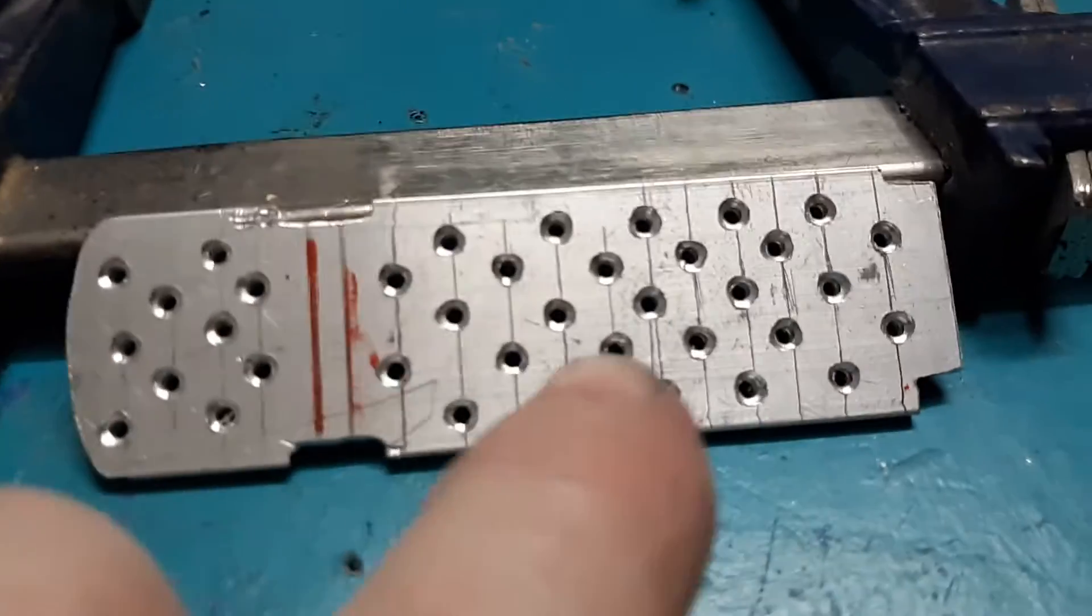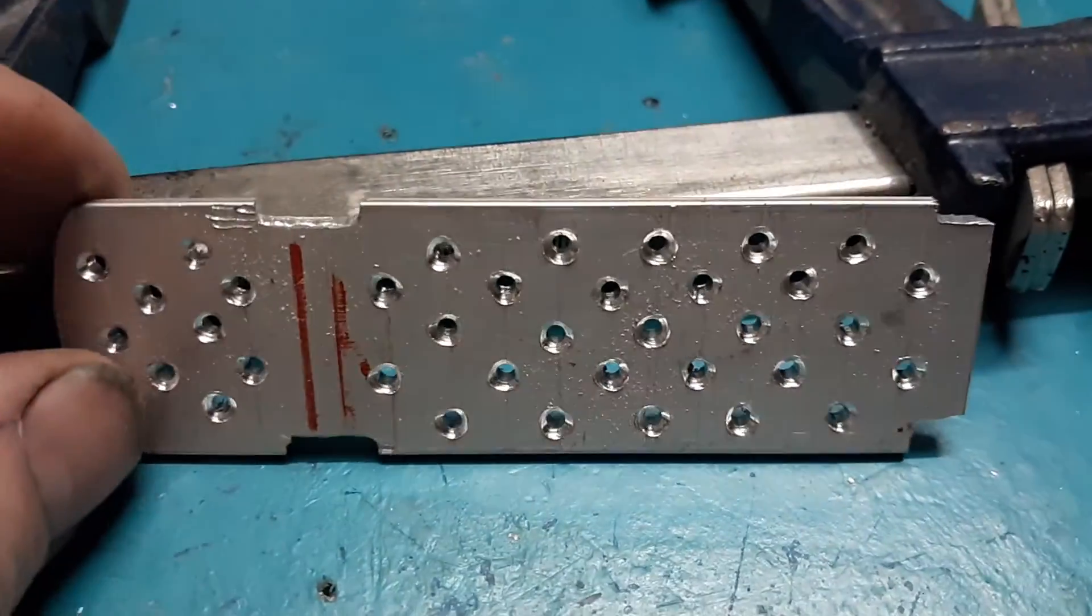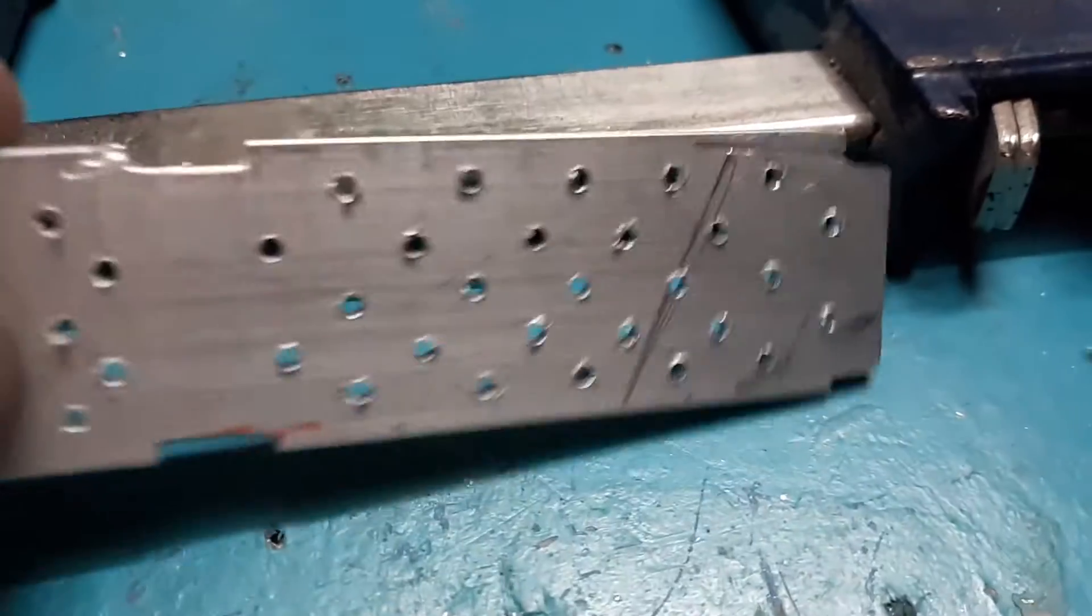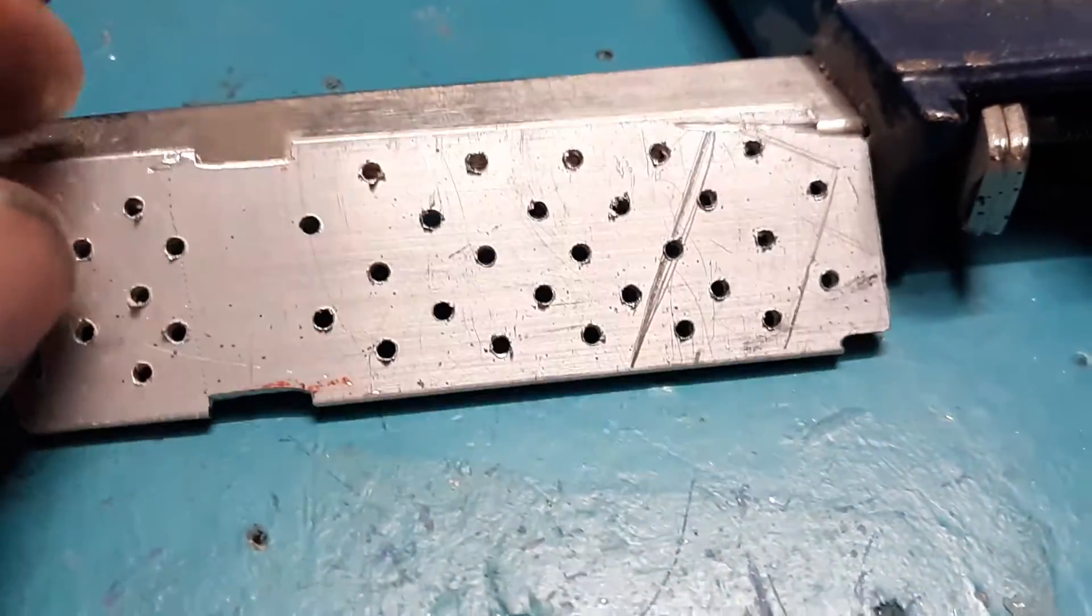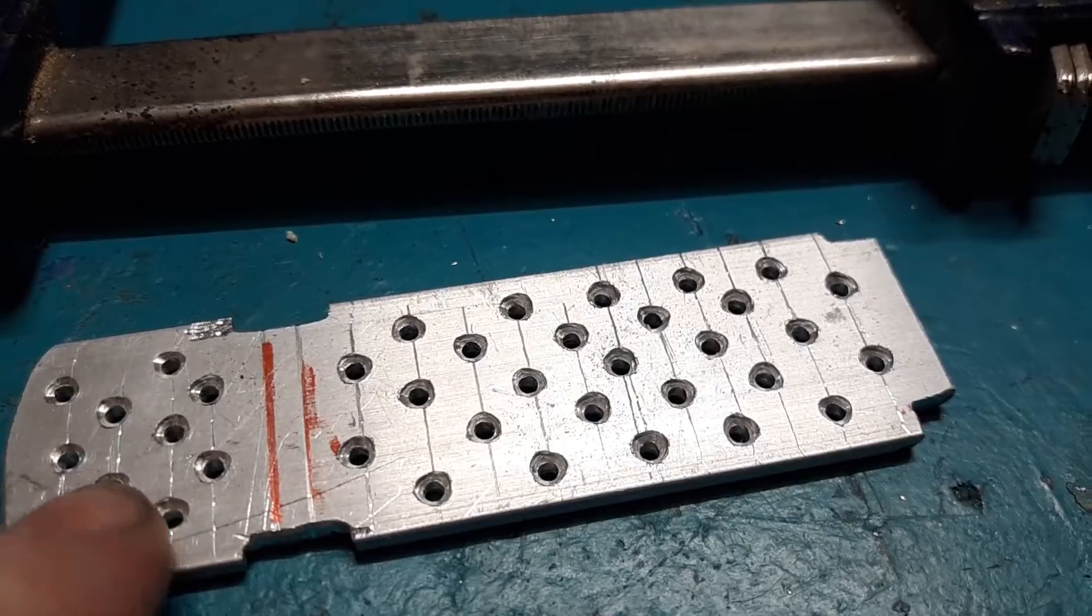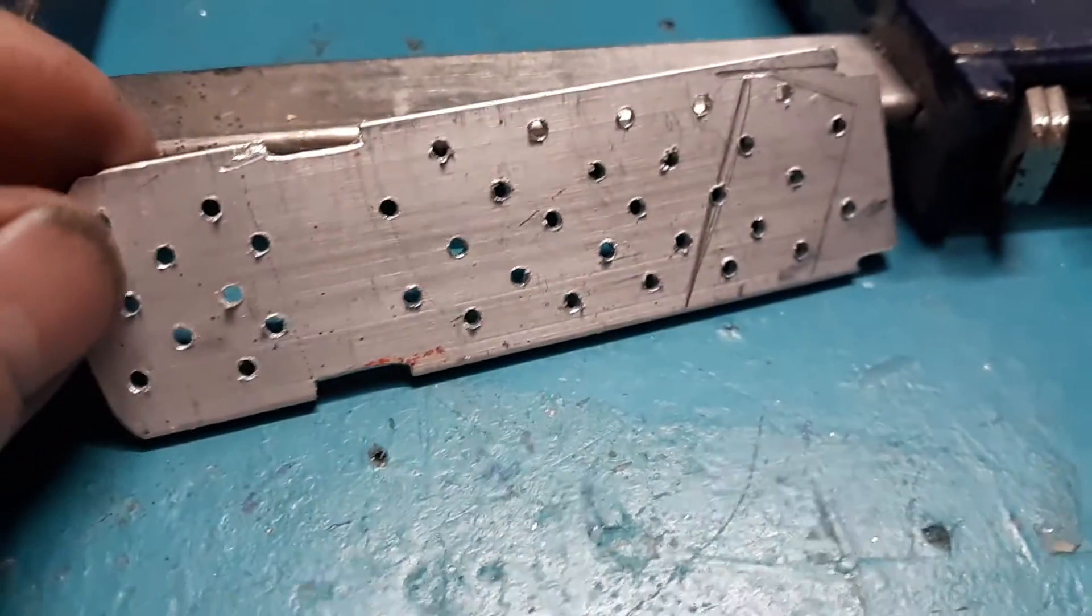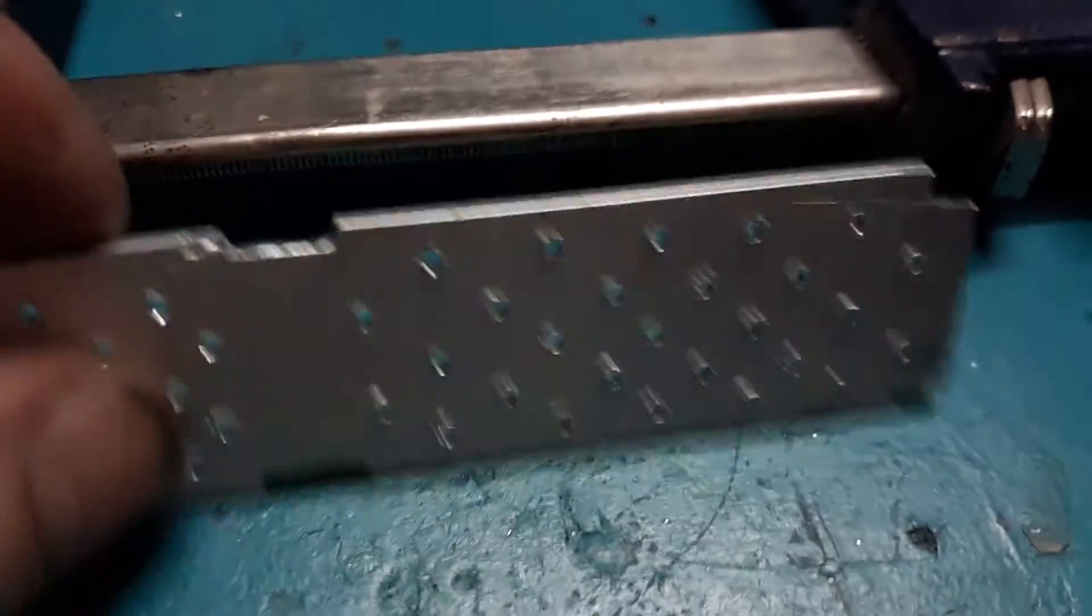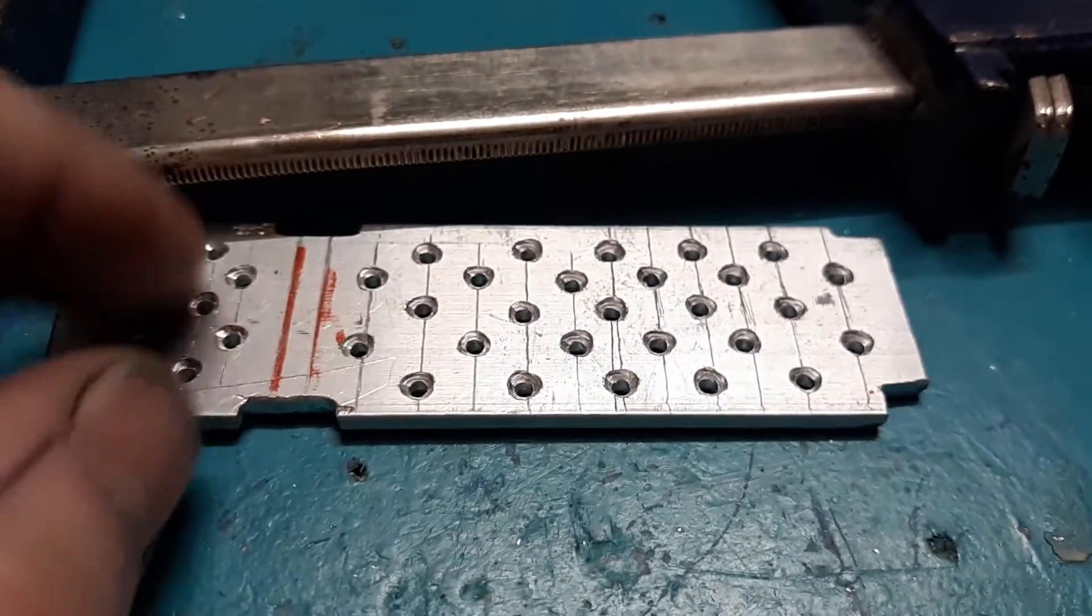Now a cheese grater or fingernail file. Now you need to go through and dimple the other side with the bigger drill bit. In this particular case I use a three millimeter to dimple it and I use a 1/16th to punch the hole through. I think that's going to be enough.